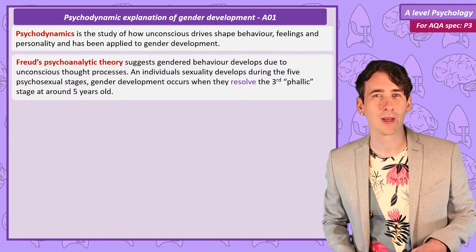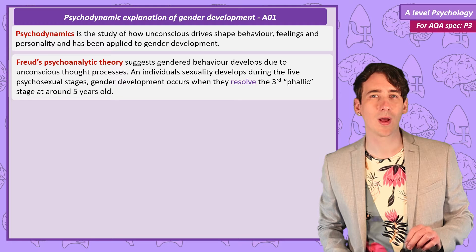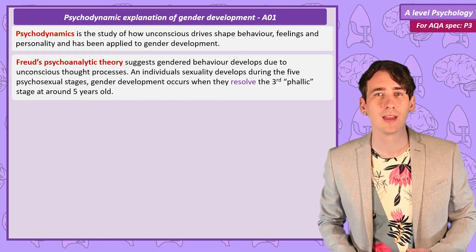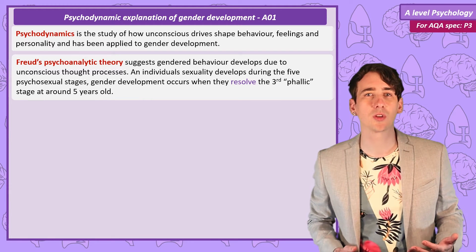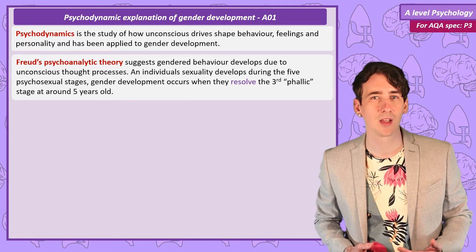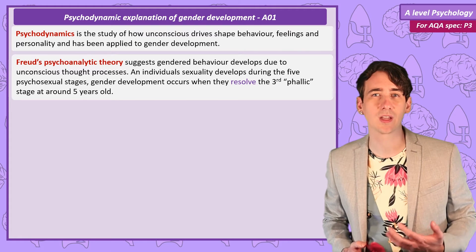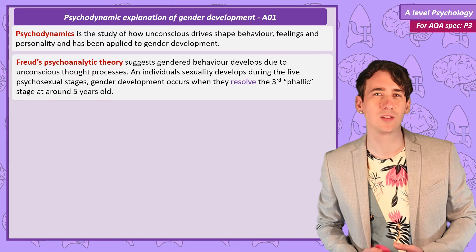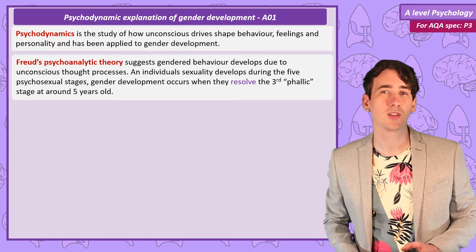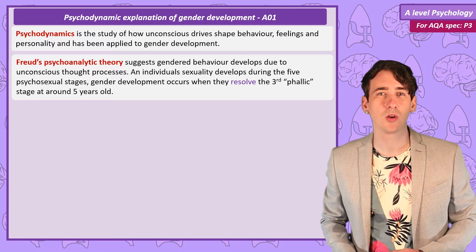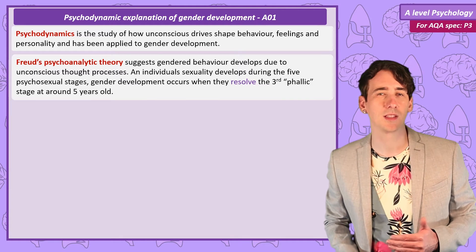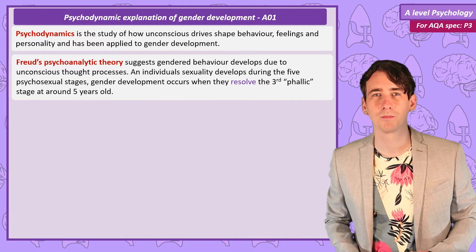Freud's psychoanalytic theory suggests that our sexuality and our gendered behaviour is a result of unconscious thought processes that are shaped during the five psychosexual stages. The third phallic stage, at around five years old, is particularly critical in developing sex-typical behaviour.